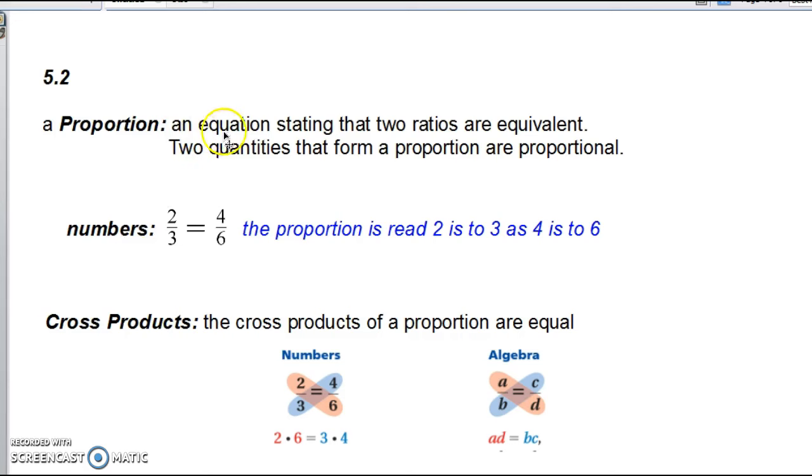A proportion. A proportion is an equation stating that two ratios are equivalent. Two quantities that form a proportion are proportional. So, let's look at this in numbers. 2 over 3 equals 4 over 6. The proportion is read 2 is to 3 as 4 is to 6. You know that that's an equivalent fraction. 2 times 2 is to 4 and 3 times 2 is to 6. Those fractions mean the same thing. Express the same quantity.